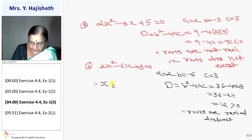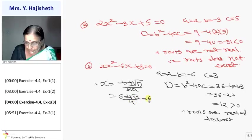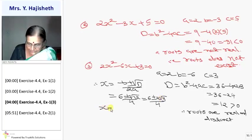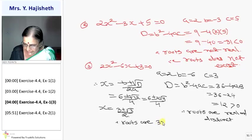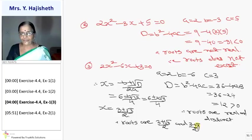Now let us find the roots. X = (−B ± √D) / 2A. So that is (6 ± √12) / 4. Now √12 = 2√3. So we get (6 ± 2√3) / 4. Taking out the common factor 2 from numerator and denominator, X = (3 ± √3) / 2. So the roots are (3 + √3)/2 and (3 − √3)/2.